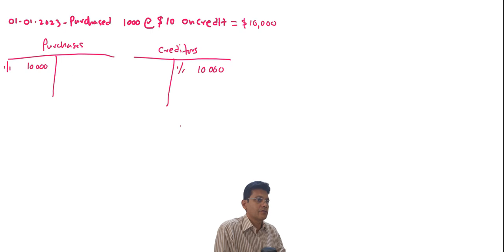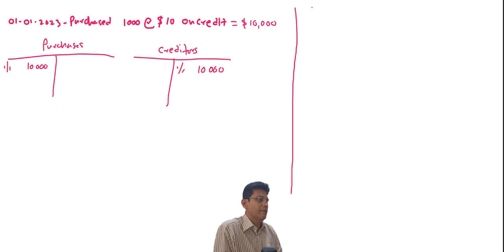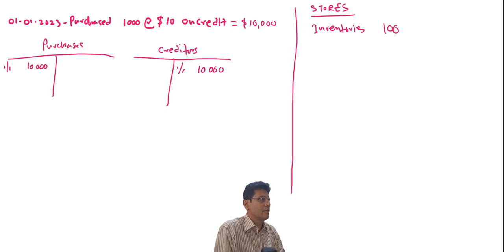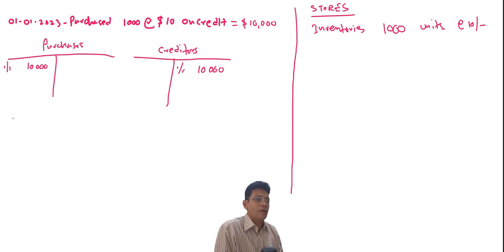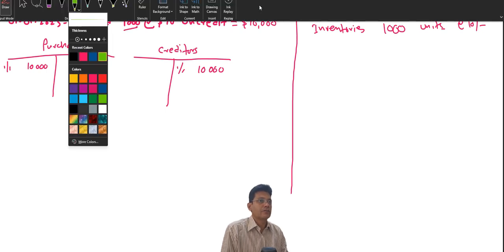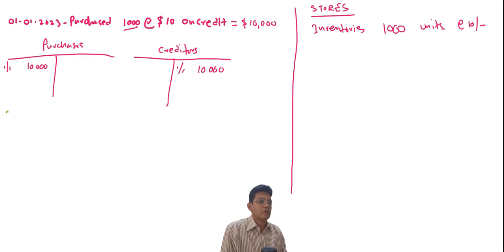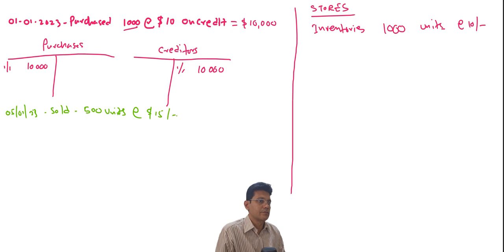When you take these stocks, they will be kept in the stores — so in the stores we have 1,000 units at the rate of $10. Now let's assume that of those 1,000 units, the company has sold some on 5th January 2023.